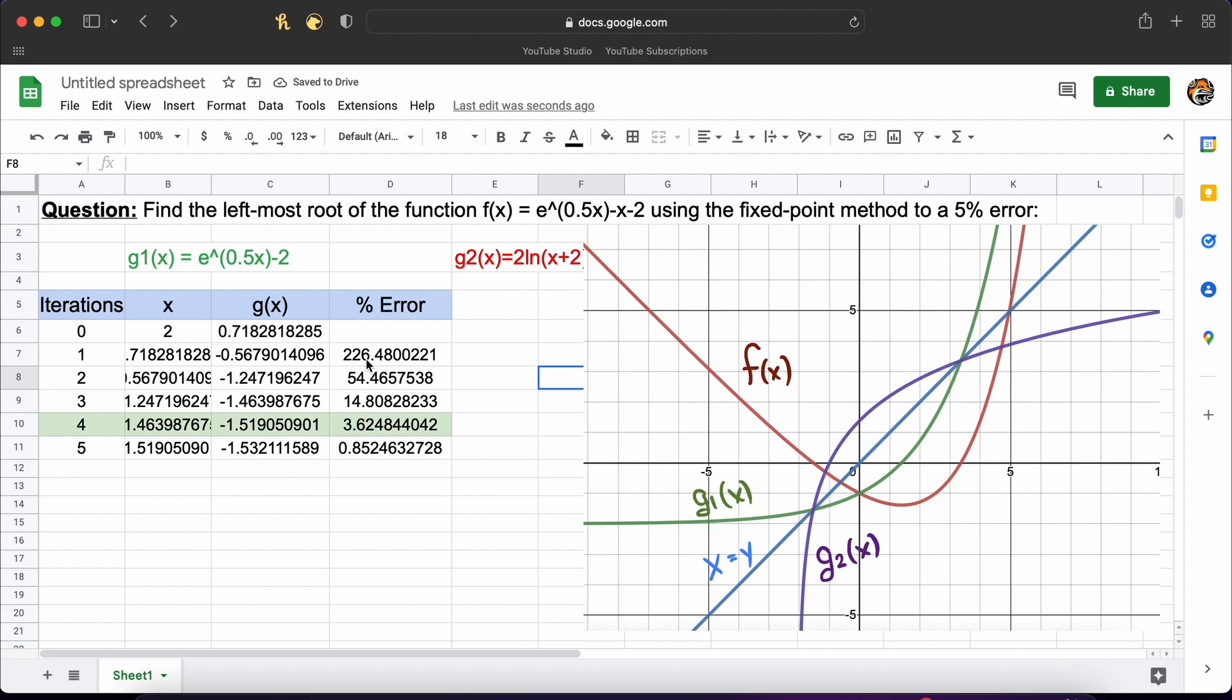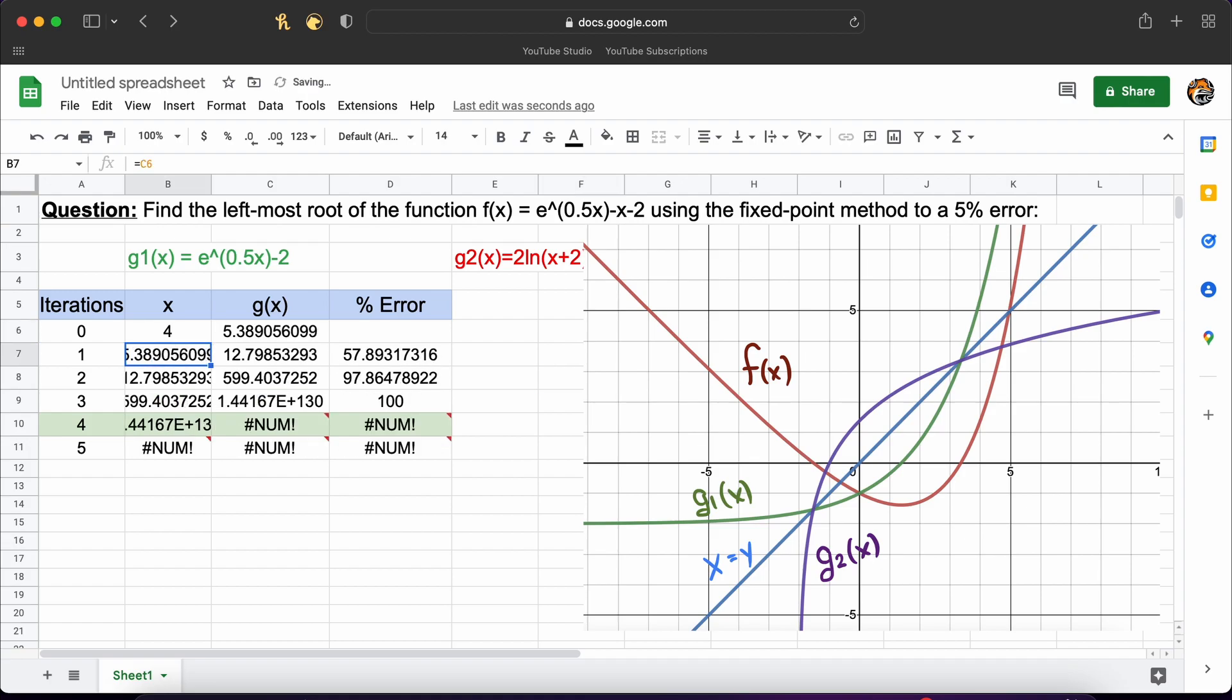I just want to note that our initial guess in the fixed point iteration method is very important. For example, if you chose a starting guess of 4 you can see that our algorithm actually diverges and our error is growing. Therefore we will never actually converge to a solution.